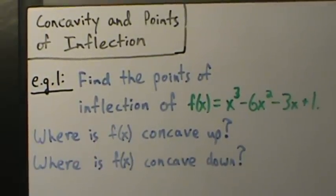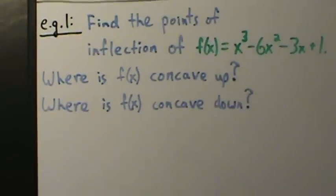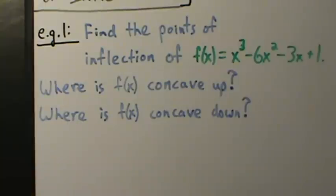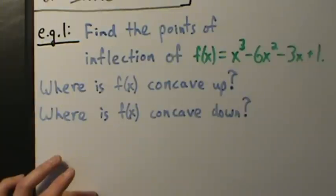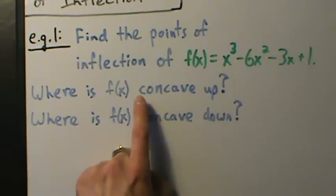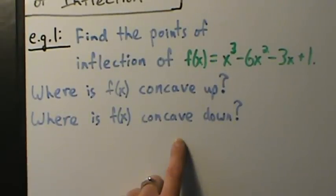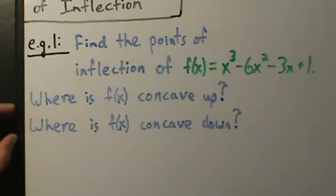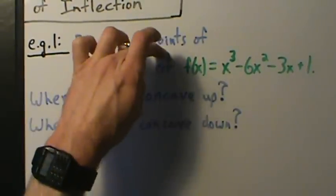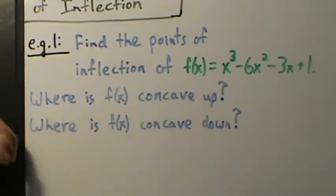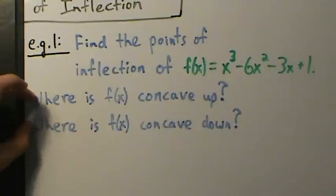As mentioned in the last video, this is really similar to finding intervals where f is increasing and decreasing, but instead of the first derivative we work with the second derivative — a function is concave up when the second derivative is positive, and concave down when the second derivative is negative. We'll do this part first, because a point of inflection is a point where the concavity changes from up to down or from down to up.